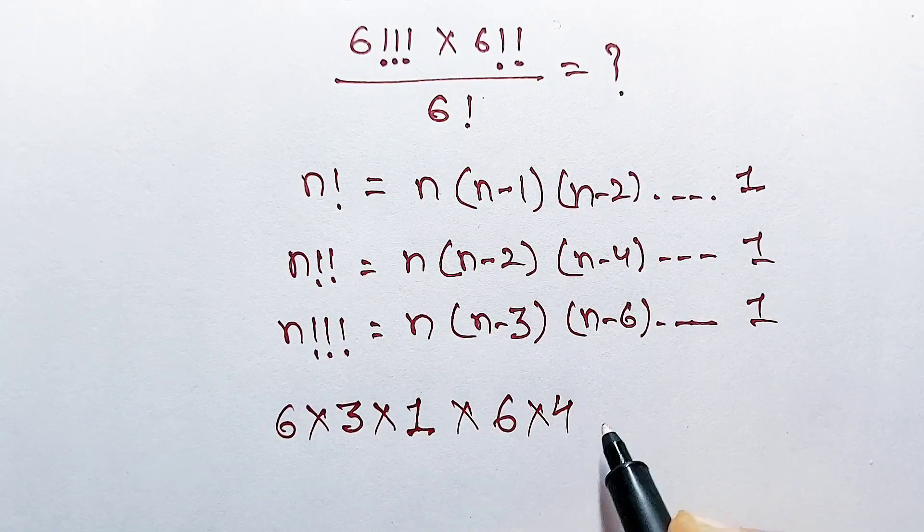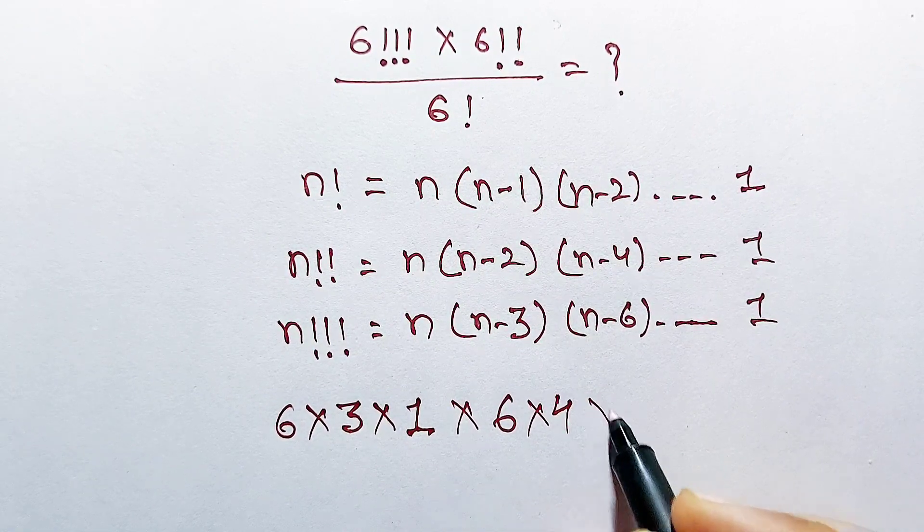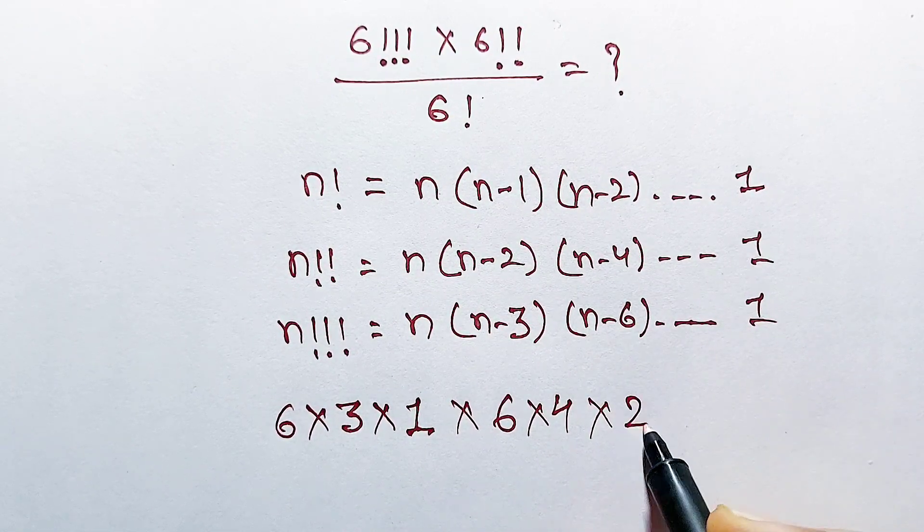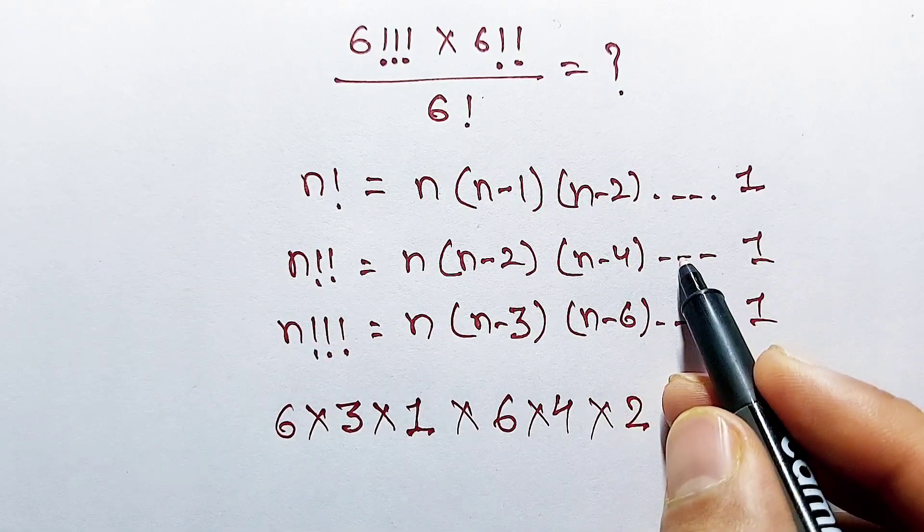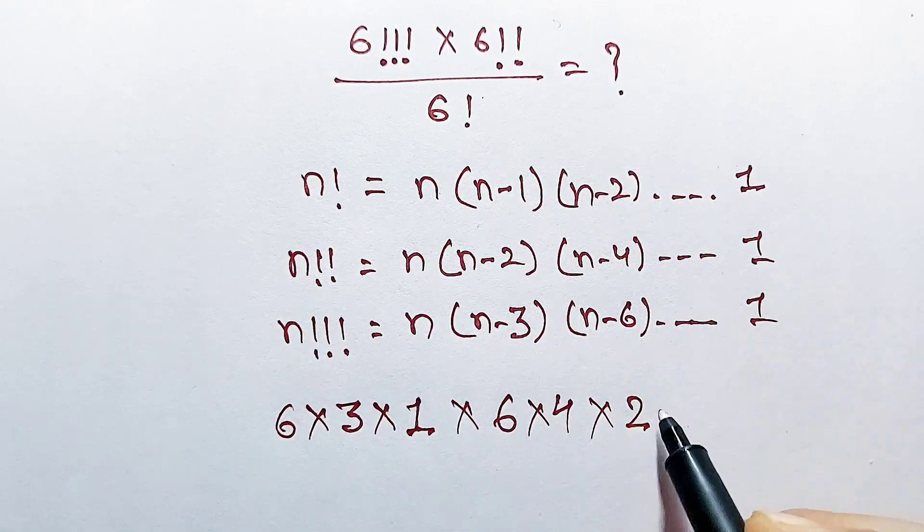6 minus 2 is 4, and 6 minus 4 is 2, and 6 minus 6 next term will be 6 minus 6 which is equal to 0.